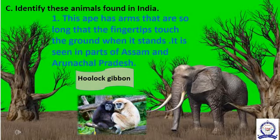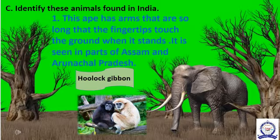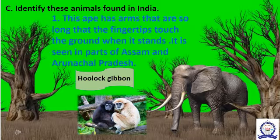Now see the next section: identify these animals found in India. The first question — see the picture. This ape has arms so long that the fingertips touch the ground when it stands. It is seen in parts of Assam and Arunachal Pradesh. This ape's name is Hoolock Gibbon.